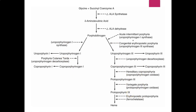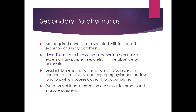There are also secondary porphyrinurias — acquired conditions associated with increased excretion of urinary porphyrins. Liver disease and heavy metal poisoning can cause excess urinary porphyrins in the absence of a true porphyria disease. Lead inhibits the enzymatic formation of PBG, increasing concentrations of delta-aminolevulinic acid and inhibiting coproporphyrinogen oxidase, causing coproporphyrin III to accumulate. The symptoms of lead intoxication are similar to those found in acute porphyrias.